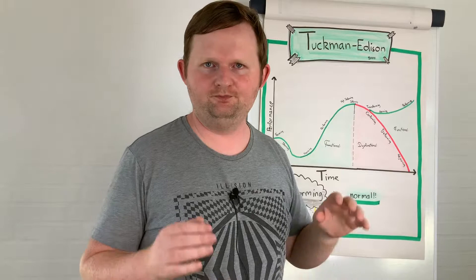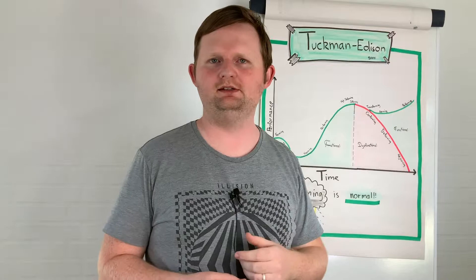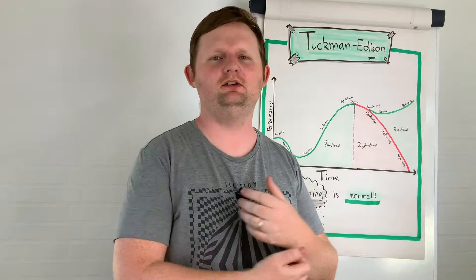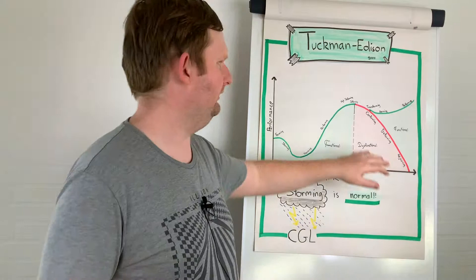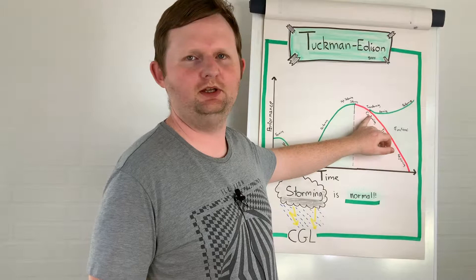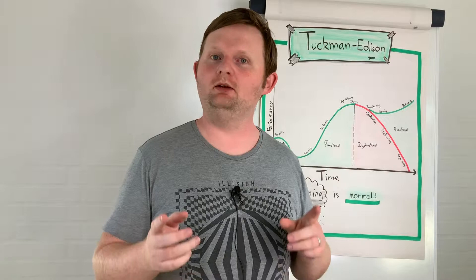If we go into this conforming phase, then we need some kind of transformational event. We need to make sure that we again begin to challenge the status quo. That is the transforming phase that Edison introduces. If we can in some way transform the team back again into a new norming phase — where we figure out what is the new status quo, what are the new agreements, the new common ground — then we can go into performing again. It repeats, and it is completely normal to go into this conforming phase, but we need to do something about it. That is where we as Scrum Masters, agile coaches, or managers need to be quite aware of what we are going to do.